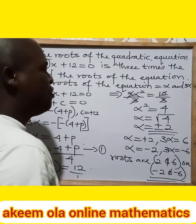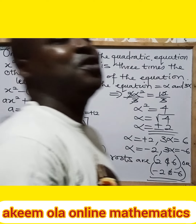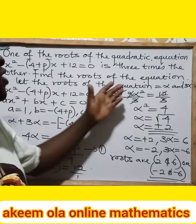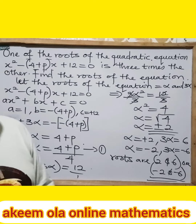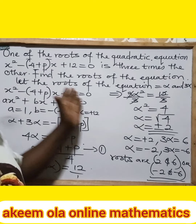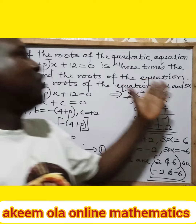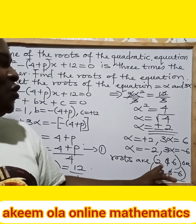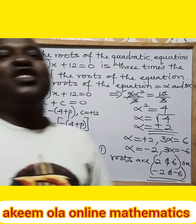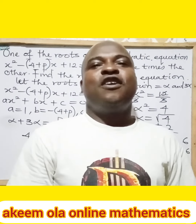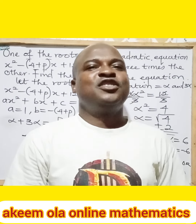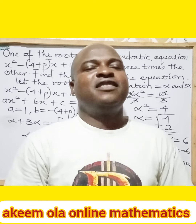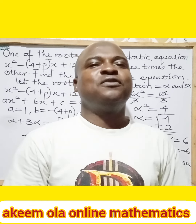It depends, but these are the values of the roots. We have come to the end of this particular solution because we only had to find the roots of the quadratic equation, and the roots are 2 and 6, or minus 2 and minus 6. We are going to stop here for now. Next time, we take it all from there.